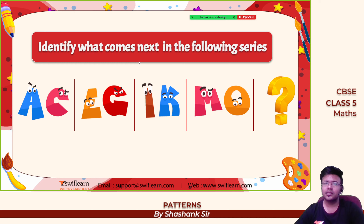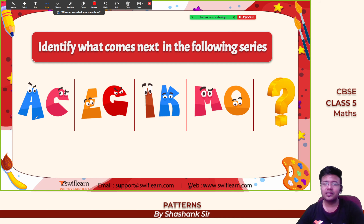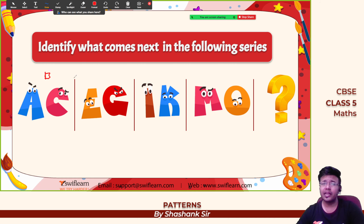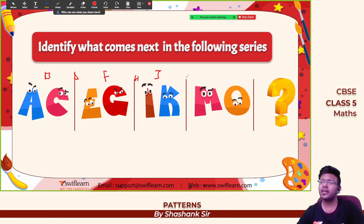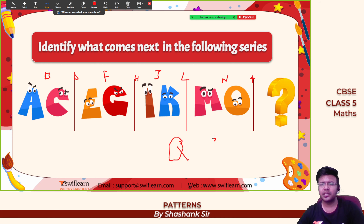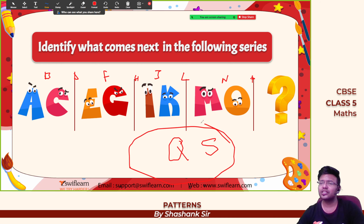Identify what comes next: A, C, E, G — every alternate letter is used: A, B is missing, C, D is missing, E, F is missing, G, H is missing — continuing: I, J, K, L, M, N, O, P, Q, R, S — so Q and S should be the answer.